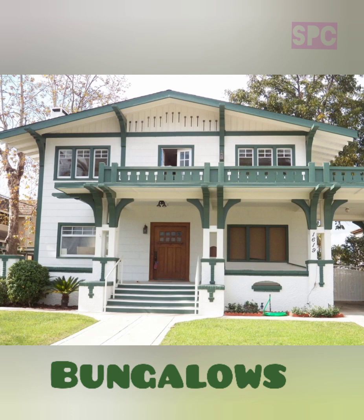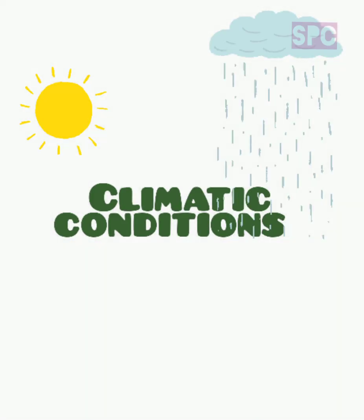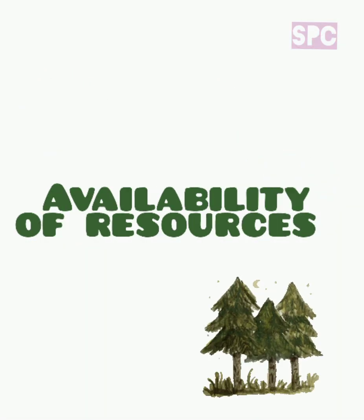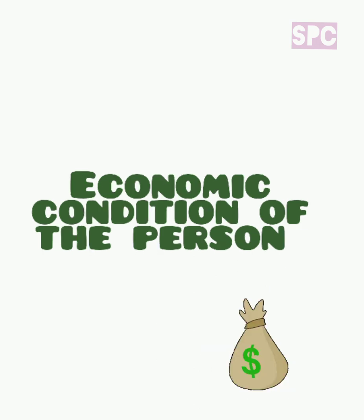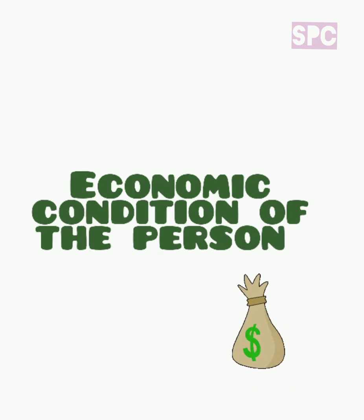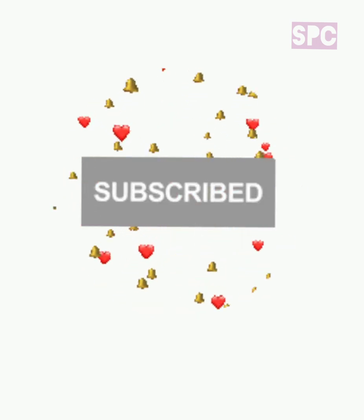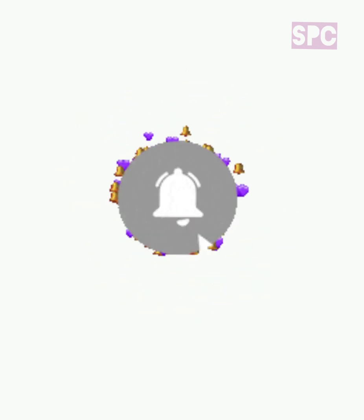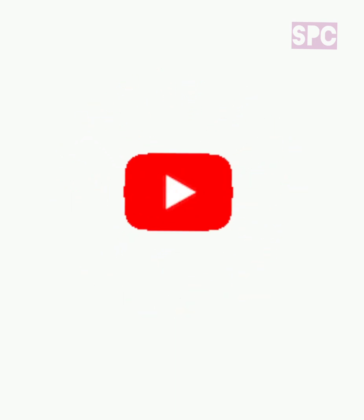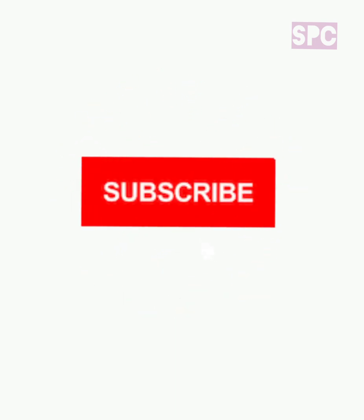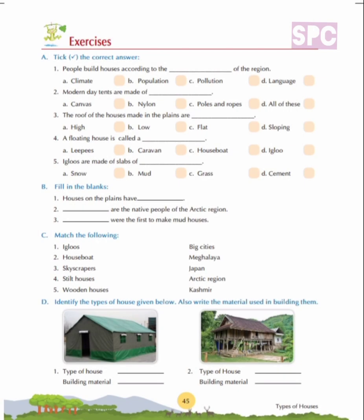In this way we learnt about different types of houses built in different regions of the world depending upon the climatic conditions, availability of material, and economic condition of the person. Now before we move on to the book exercises, I request all my students to subscribe the channel and press the bell icon to get notifications of upcoming tutorials. Let's move on to the book exercises, Question A: Tick the correct answer.